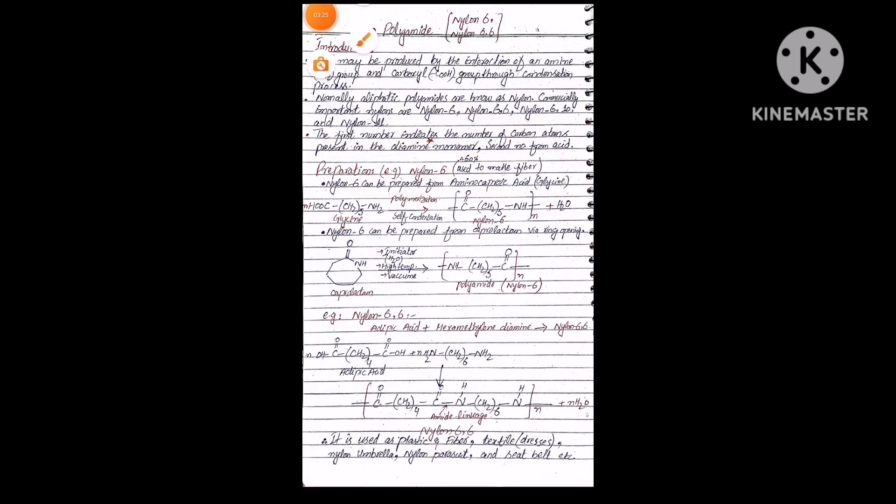It will undergo polymerization which is self polymerization, meaning H from this amine part and OH from this acid part will release in the form of water. Here is the release of water molecule and the remaining species which is nylon 6. It will undergo self condensation and polymerize to form a polymer named polyamide, with the special name nylon 6, in which amide linkage takes place. Here is the carbon-nitrogen chain.